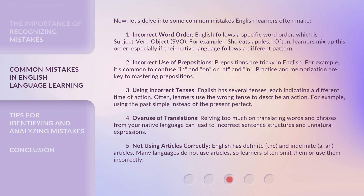5. Not Using Articles Correctly. English has definite ('the') and indefinite ('a,' 'an') articles. Many languages do not use articles, so learners often omit them or use them incorrectly.